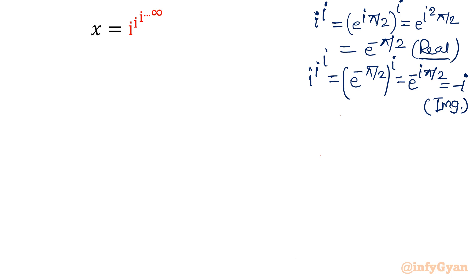One more value: i power i power i power i. Three exponents are there. Its value will be minus i power i. We can write minus e raised to the power i pi by 2, whole power i. That value will come out minus e raised to minus pi over 2, and you can again observe it is real.